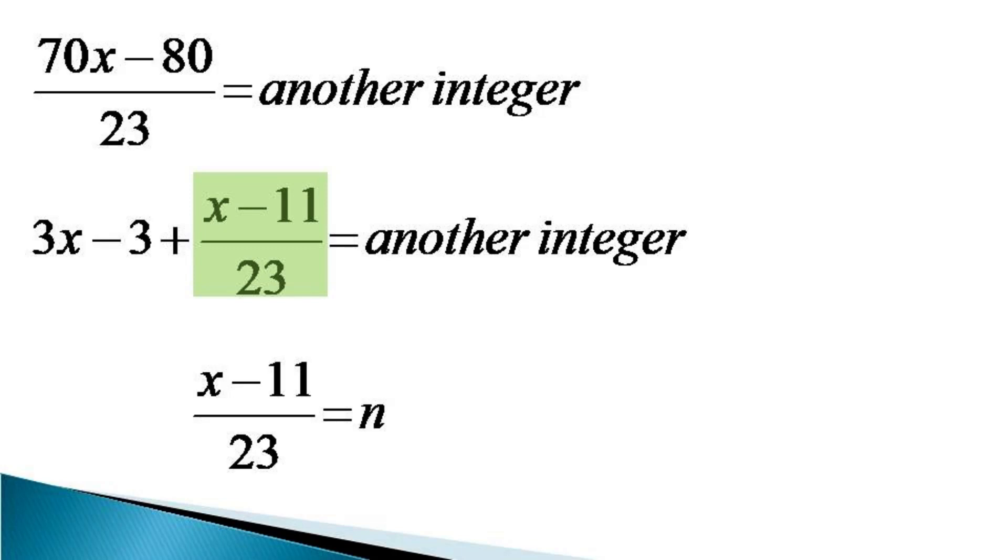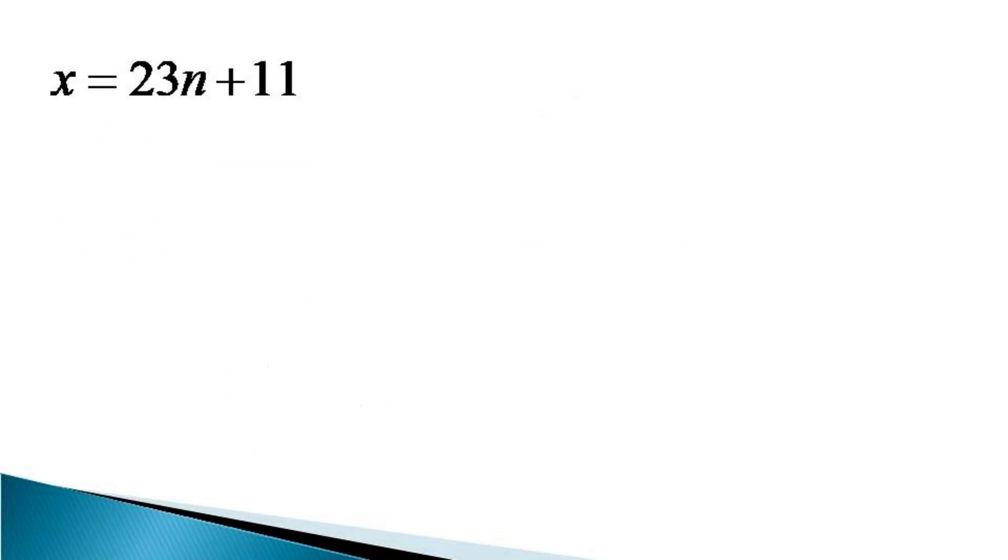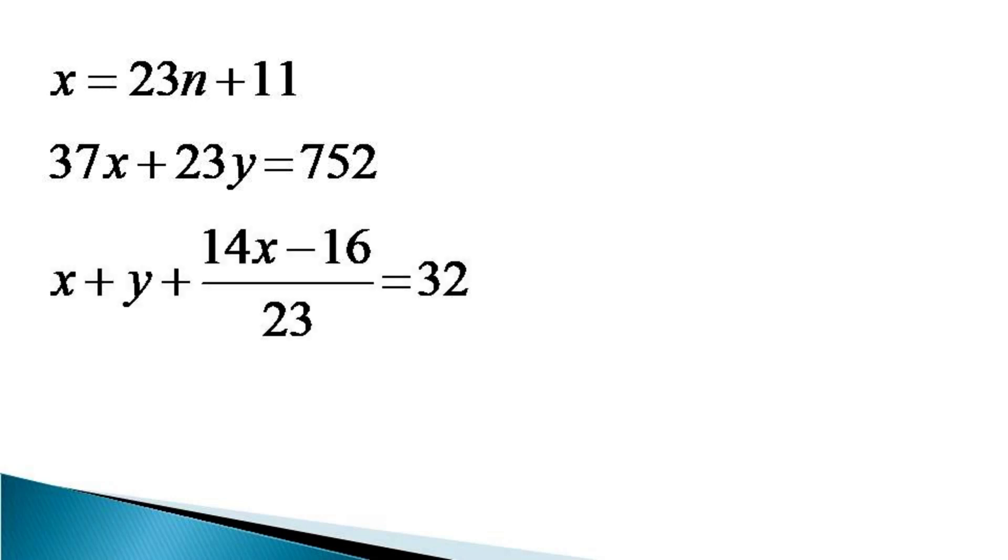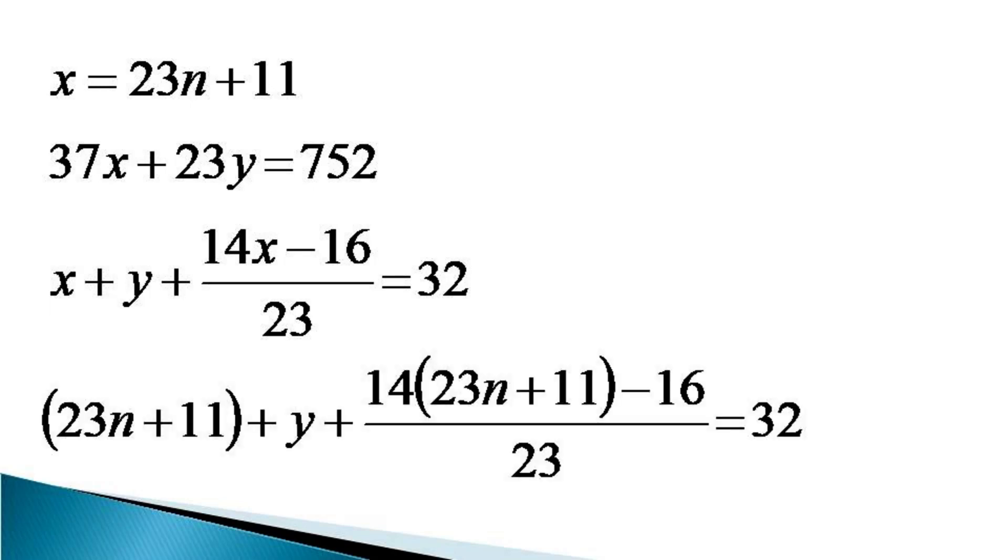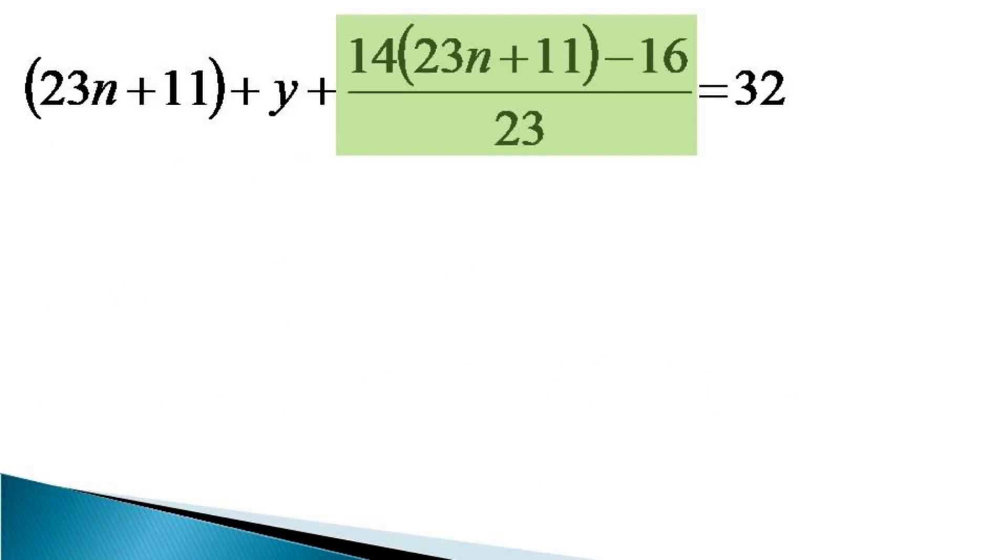Cross multiplying this equation we get the value of x as x is equal to 23n plus 11. We come back to the original algebraic equation that was 37x plus 23y is equal to 752 and it was rearranged as x plus y plus 14x minus 16 by 23 is equal to 32. We put the value of x in this equation and the equivalent equation becomes in terms of n and y. Here we can observe that the last term which was supposed to be an integer after simplification also remains integer as 14n plus 6.